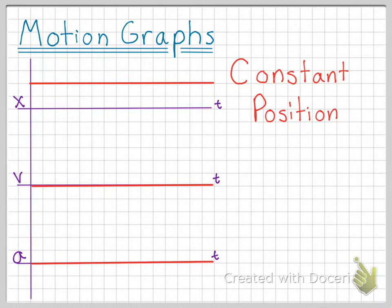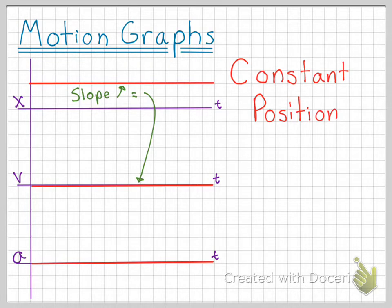You will notice when working with the graphs that the slope of one graph will be what is graphed on our next graph. For example, with these graphs here, the slope of the position versus time graph is zero, so therefore the points graphed in the velocity versus time graph are zero. The same idea can be applied to the velocity versus time graph and the acceleration versus time graph — since the slope of the velocity versus time graph is zero, zero is graphed on the acceleration versus time graph.